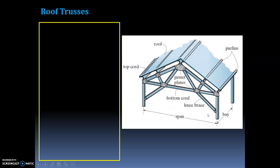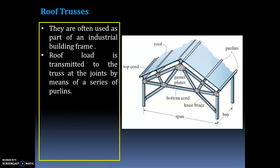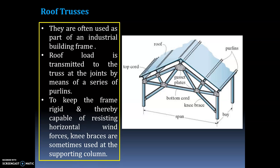Roof trusses are often used as part of an industrial building frame. In the figure you can see the roof, purlins, gusset plate, top cord, bottom cord, knee brace, and the span of the truss. The roof load is transmitted to the truss at the joints by means of a series of purlins. Knee braces are sometimes used at the supporting column to resist horizontal wind forces.